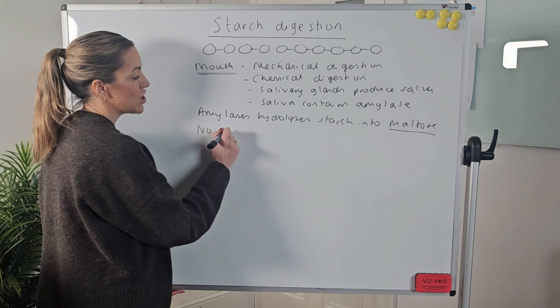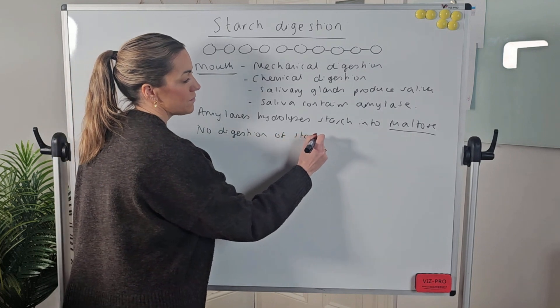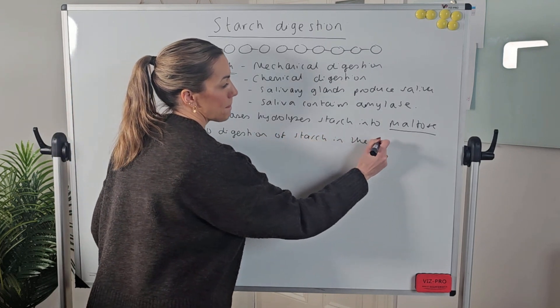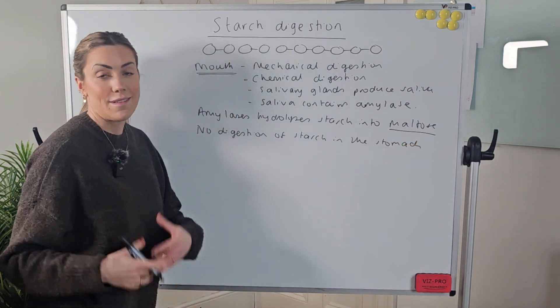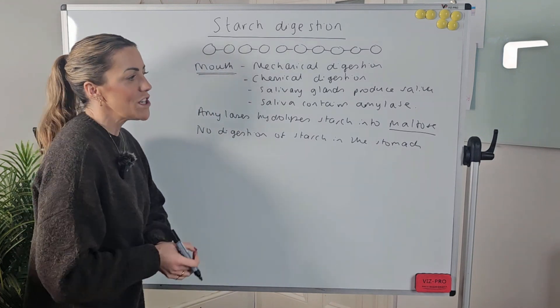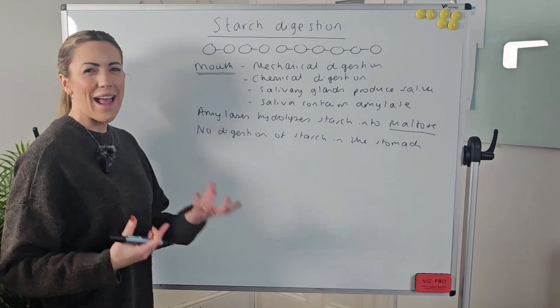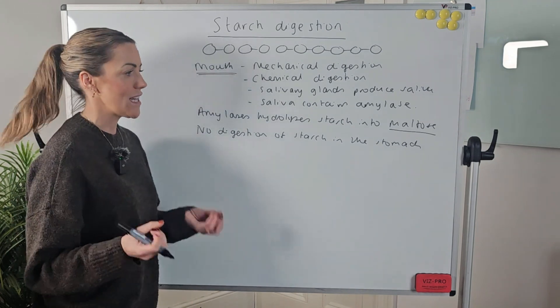There is no digestion of starch in the stomach. Because, well, think about it, the stomach contains really strong hydrochloric acid, which is going to denature any of those amylase enzymes. There's no enzymes that can digest starch in the stomach.